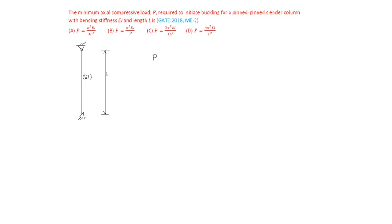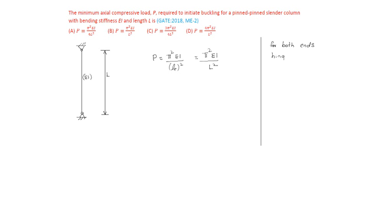It is P equal to pi squared EI by effective length squared, which equals pi squared EI by L squared, because for both ends hinged, effective length equals original length. So the answer is pi squared EI by L squared — option B is the right answer.